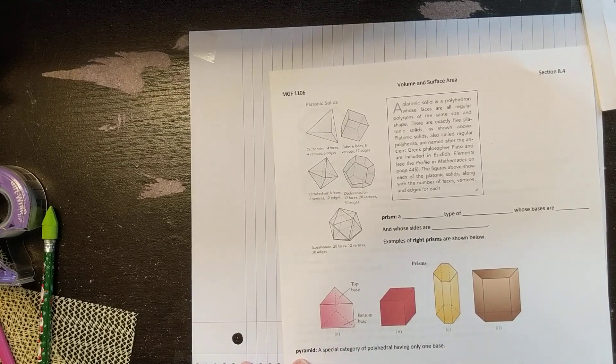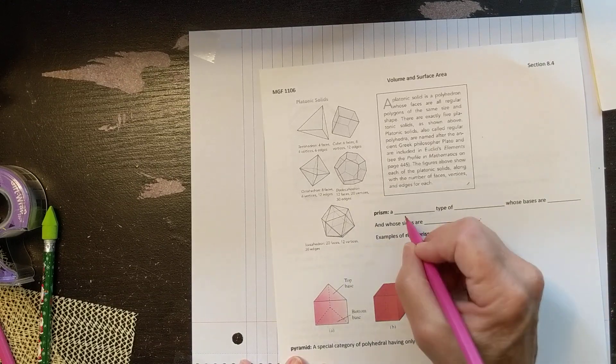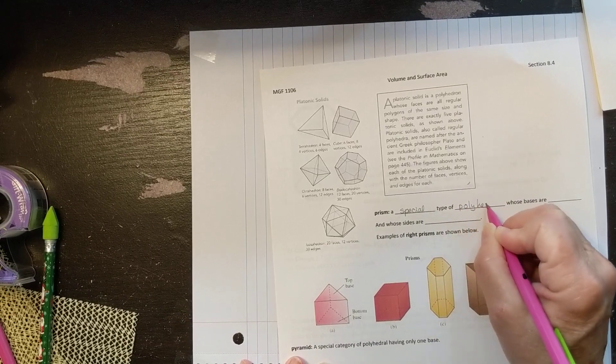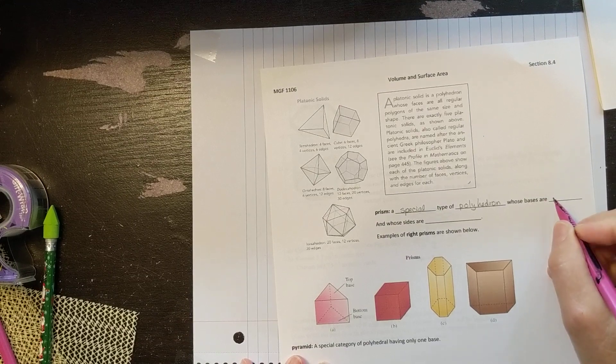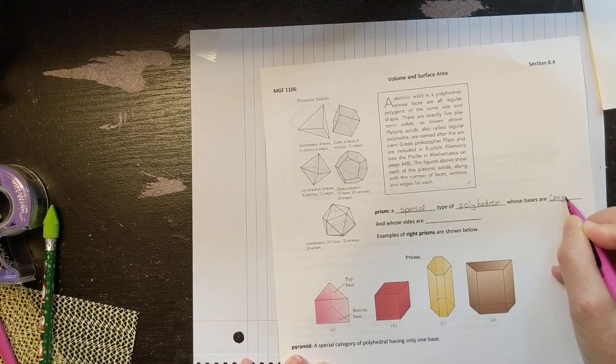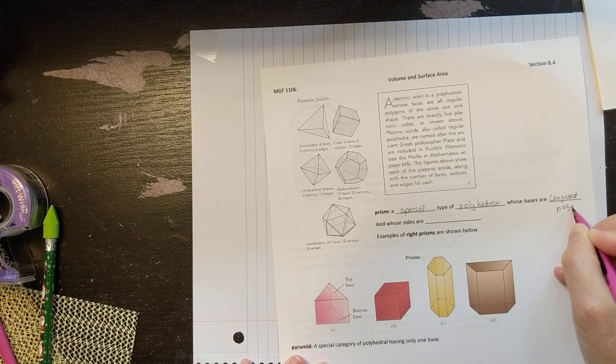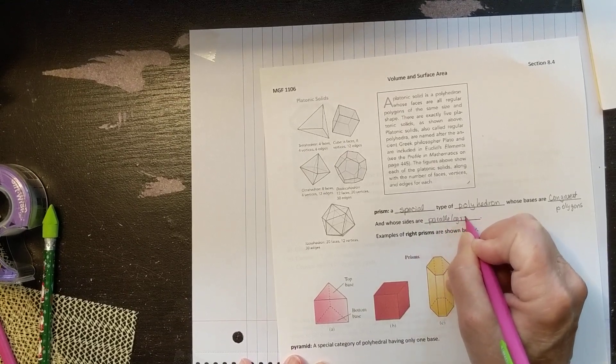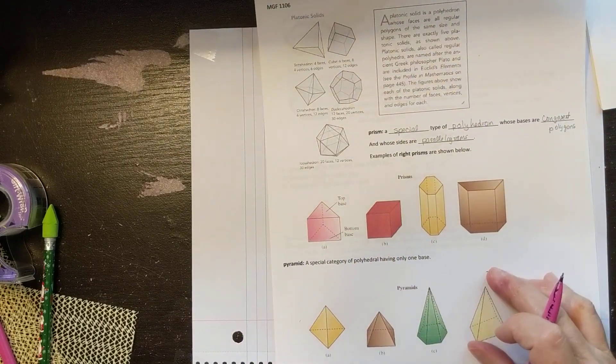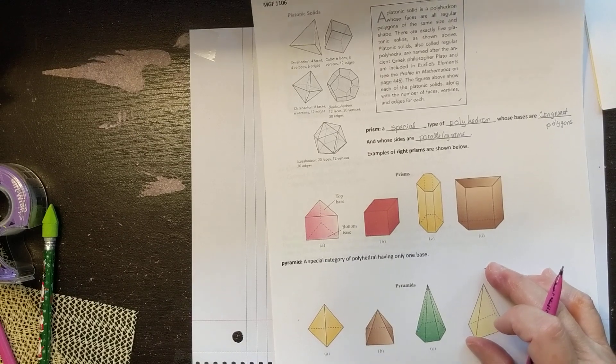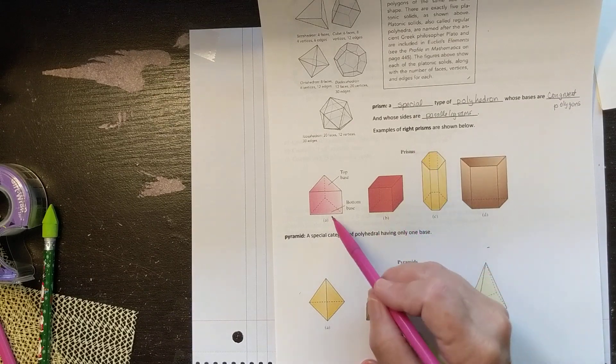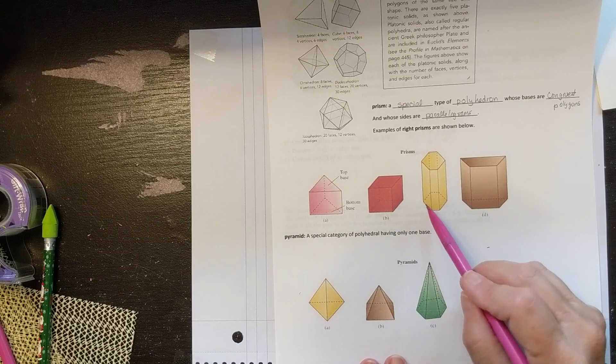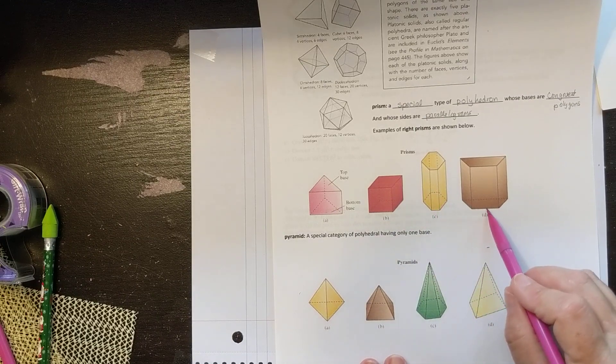Now here is the word prism. A prism is a special type of polyhedron whose bases are congruent polygons and whose sides are parallelograms. So here are some examples of right prisms and that's what they'll be referring to in this book if you deal with prisms. You see that the base here is a regular polygon, an equilateral triangle, and it's just extended. The base here is a square and it's just extended. The base here is a hexagon and it's just extended. And the base here is a trapezoid and it's just extended.